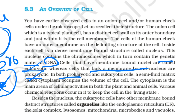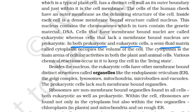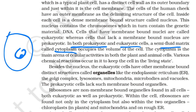The next most important thing is that in both prokaryotic and eukaryotic cells, there is a semi-fluid matrix called cytoplasm. The cytoplasm occupies the maximum volume of the cell.